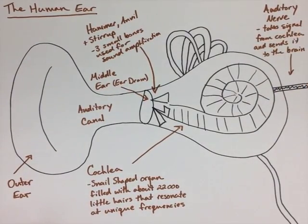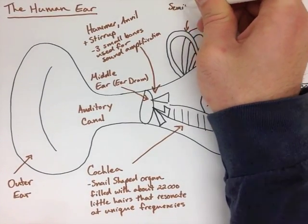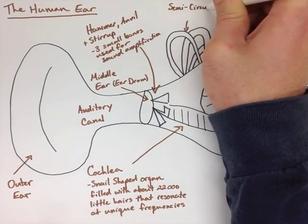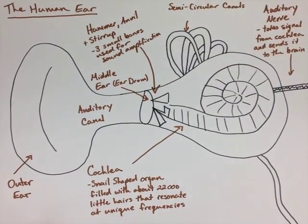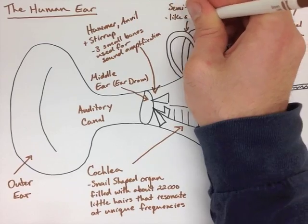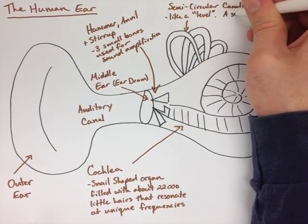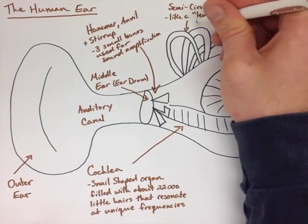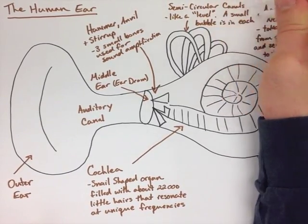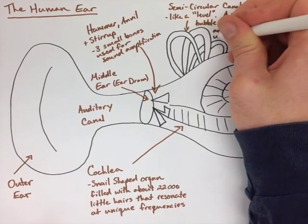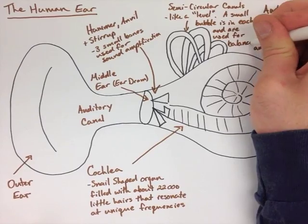The next thing we're going to look at are the semicircular canals. Now they're like a level for your body. There's a small bubble in each of these canals, and it's used for balance. If you think of a level on a wall, it's the exact same principle, and this is why we get dizzy when we spin around. That bubble moves, and it's in an inappropriate spot for us to stand still, and we get dizzy.